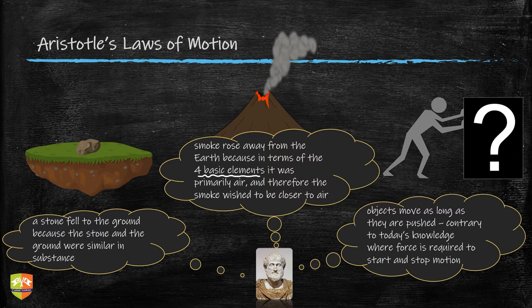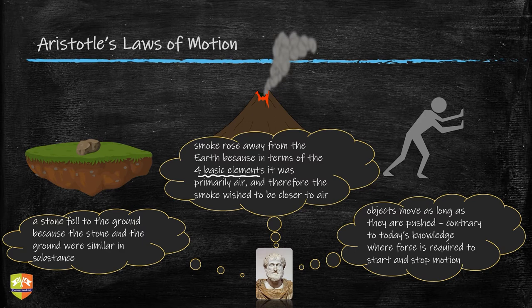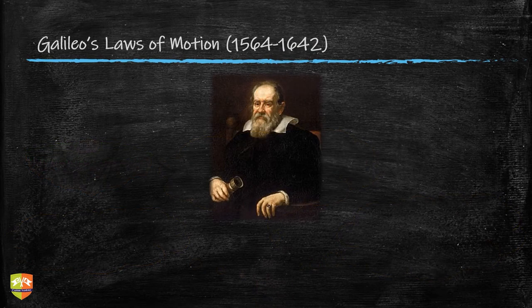The most contentious part of Aristotle's theory — later refuted by both Galileo and Newton — was that objects move as long as they are pushed. That means if something is moving, it is constantly being pushed. Today we know that you don't require a continuous force to keep something moving; you only need force to start and stop it. If there is no friction, it will continue moving. Aristotle could not see that friction was opposing the motion, which was later clarified by Galileo.